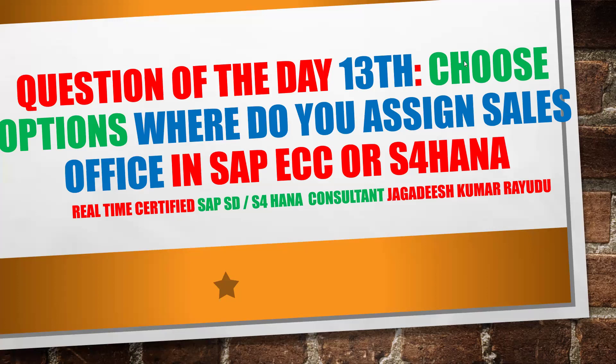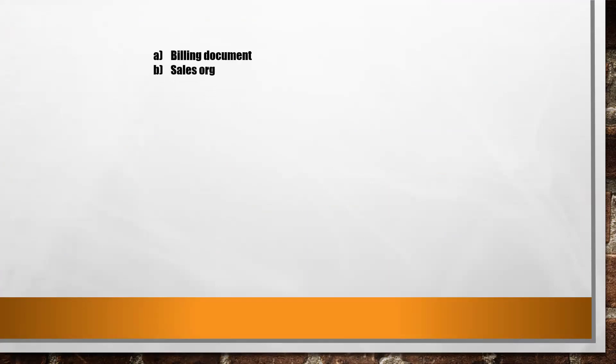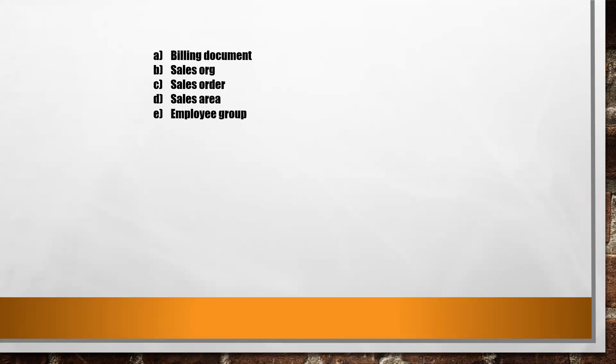So what is the question? Choose the options: where do you assign a sales office in SAP ECC or S4 HANA? Every day questions might not be this simple. First option: billing document. Second option: sales organization. Third: sales order. Fourth: sales area employee group.